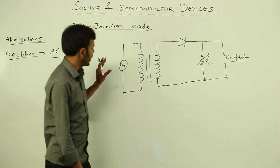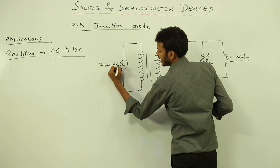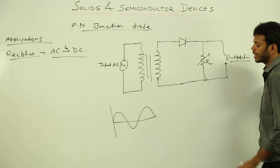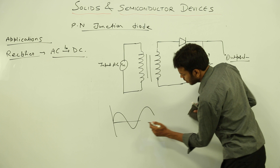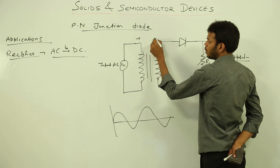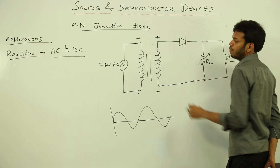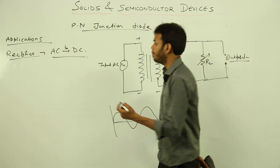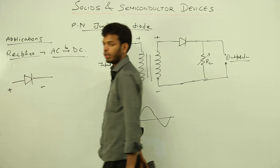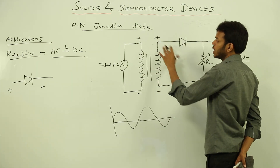When input AC is applied, it produces a regular AC graph — an ordinary current graph. During the positive half cycle, the positive side means this side is negative, so the diode is in a forward bias state: the P side is connected to the positive terminal and the N side is connected to the negative terminal. This is when a diode is said to be in a forward bias state.